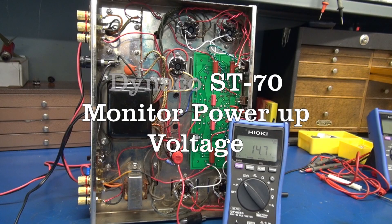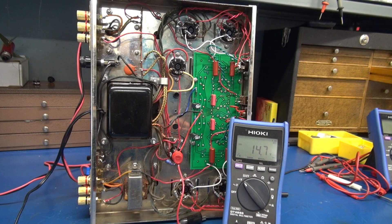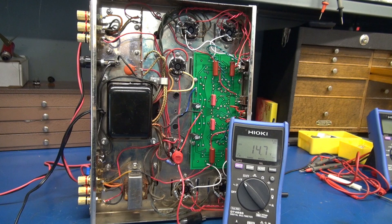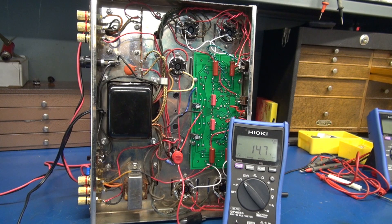Here is the power-up of the Dyneco ST70. We're monitoring the voltage right on the main filter cap, so you're going to see an increase when the tubes warm up, then the voltage will settle down.